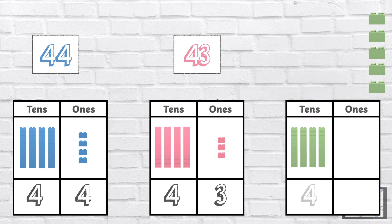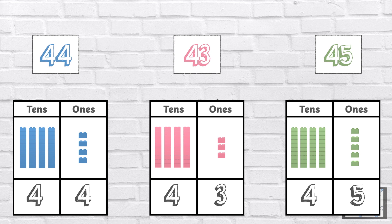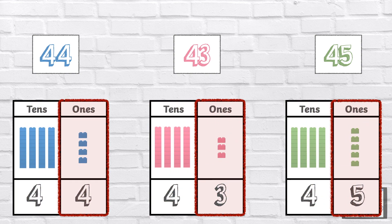Now let's count the green bricks. There are four 10s and five 1s, so there are 45 green bricks. Now we can compare them. Remember, when we compare numbers, we look at the 10s digit first. But all of these numbers have four 10s, so now we can look at the 1s. The group with the least amount of 1s is the pink group with 3 ones, and the group with the most is the green group with 5 ones.